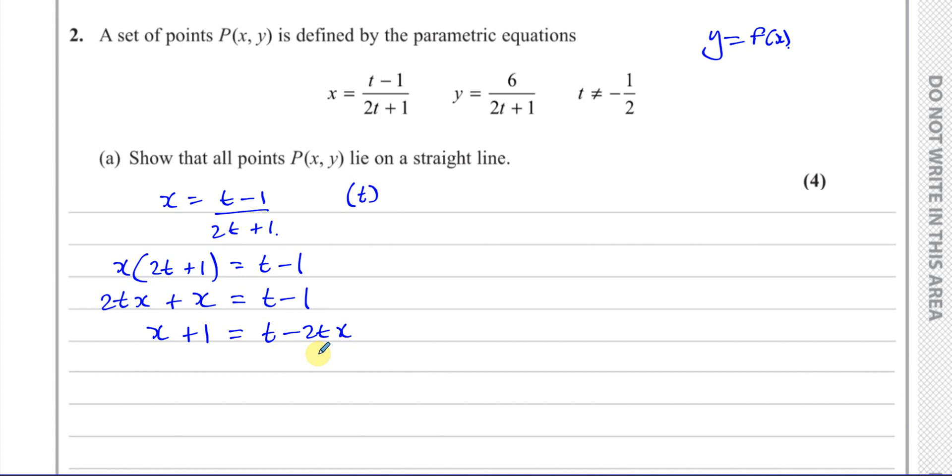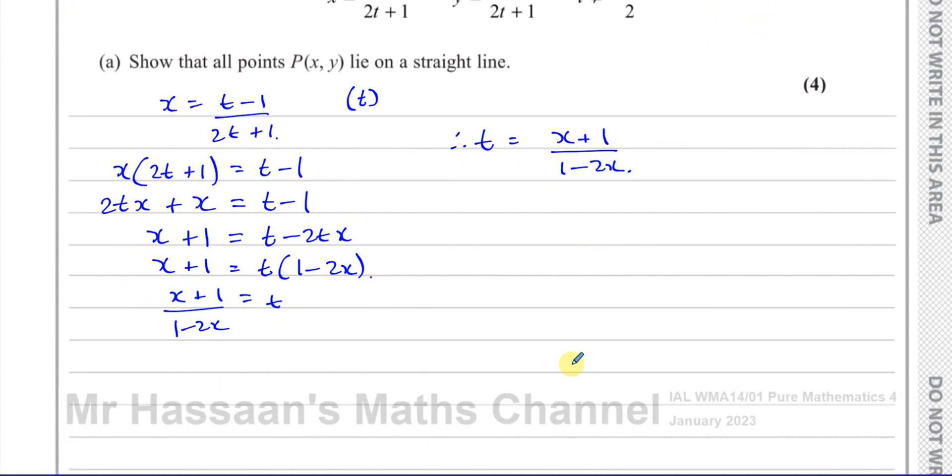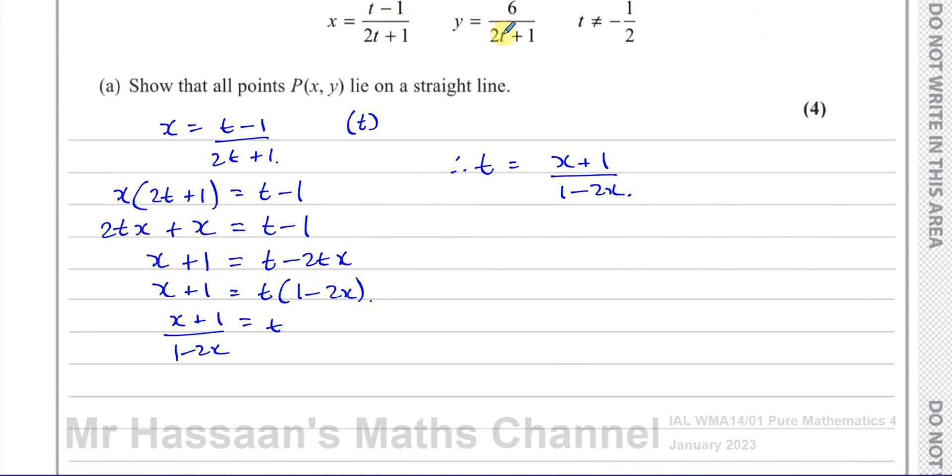Actually, let me recalculate. I have 2tX + X = t - 1, so I'll write -t + 2tX = -X - 1. No, let me be clearer: x + 1 = t - 2tX, so x + 1 = t(1 - 2X). Now I can take T as common, so I have t(1 - 2X) = x + 1. Dividing both sides by 1 - 2X gives t = (x+1)/(1-2x). Therefore, T is equal to (X+1)/(1-2X).